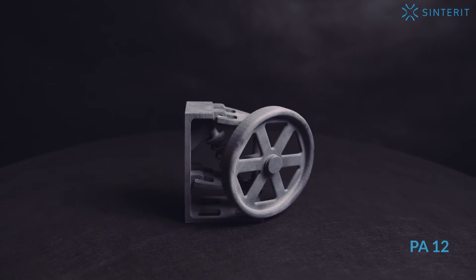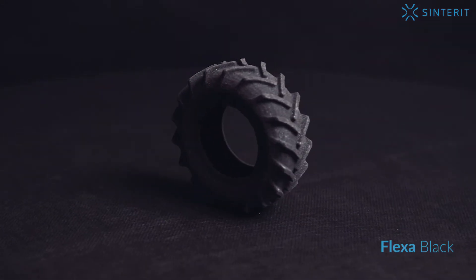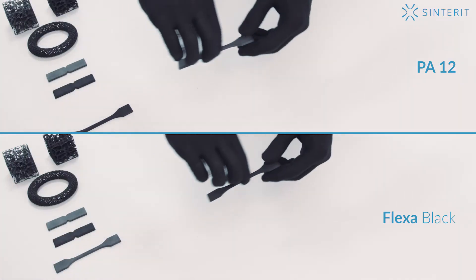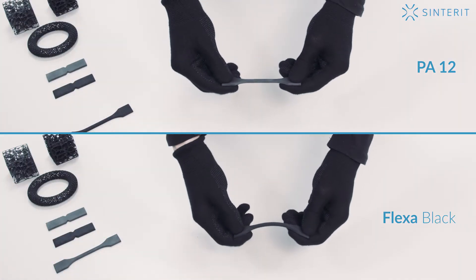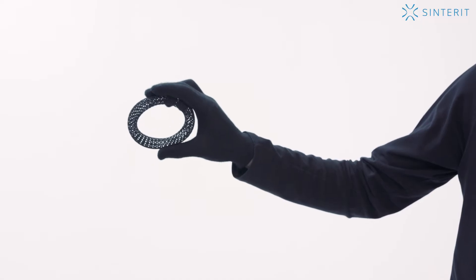Sinterit LISA allows to print using different materials. Selecting the material significantly impacts the mechanical properties of the printed elements. This is a manual on how to prepare the Sinterit LISA printer to print using different materials.